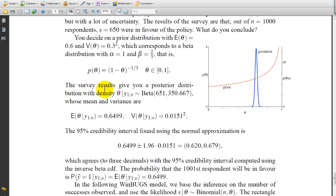The survey results give you a posterior distribution with density theta given Y sub 1 to N. This distribution is a beta 650, 350, 667, whose mean and variance are theta given y sub 1 to n equals 0.6499, variance theta given y sub 1 to n equals 0.0151 squared.